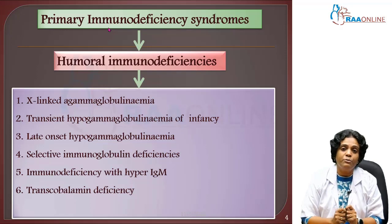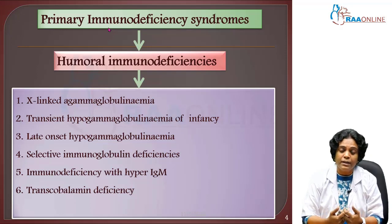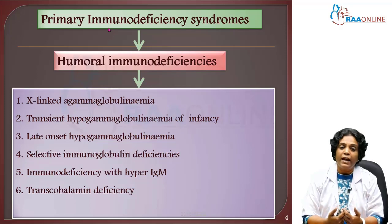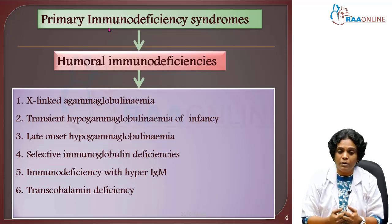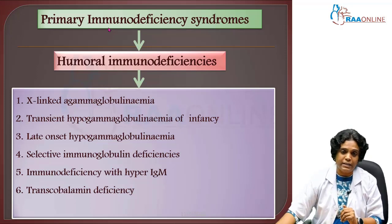The fourth type is selective immunoglobulin deficiencies, where selective immunoglobulins such as IgA, IgM, or IgG will be deficient. The fifth is immunodeficiency with hyper-IgM, where other immunoglobulins are reduced while IgM is elevated. The sixth type is transcobalamin deficiency, mainly due to vitamin B12 deficiency.